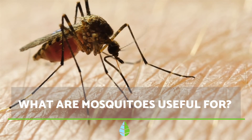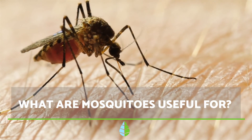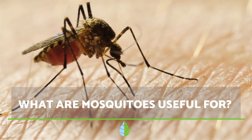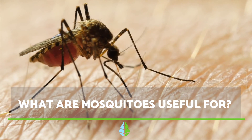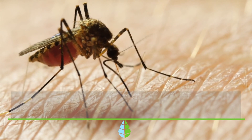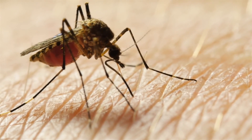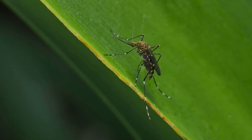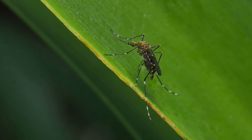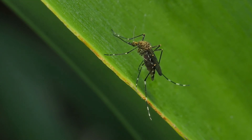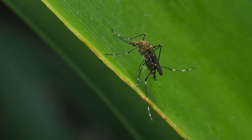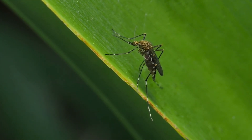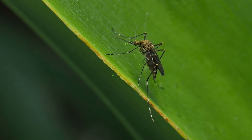Mosquitoes are one of the most abundant insects on the planet, fulfilling important ecological functions. In this Daily Eco video, we explain the functions these little critters have, thus answering the golden question: why do mosquitoes exist? Let's get started.